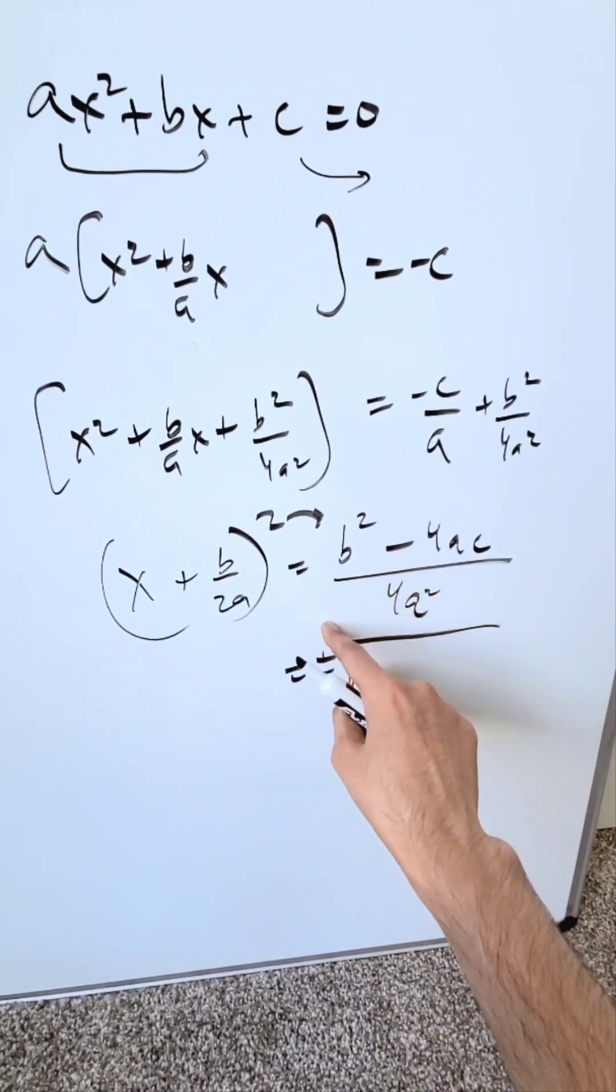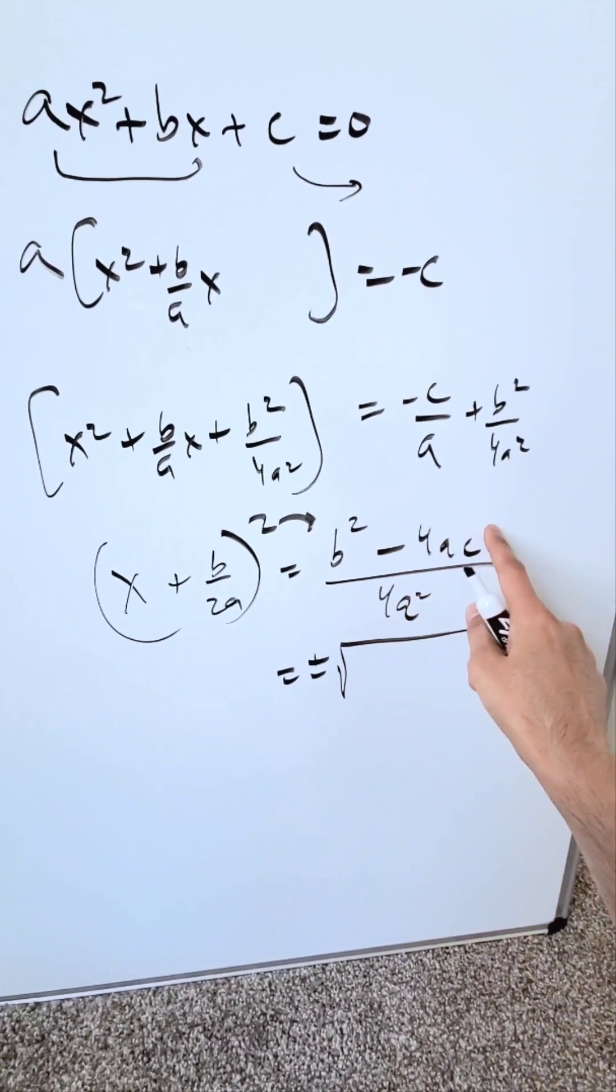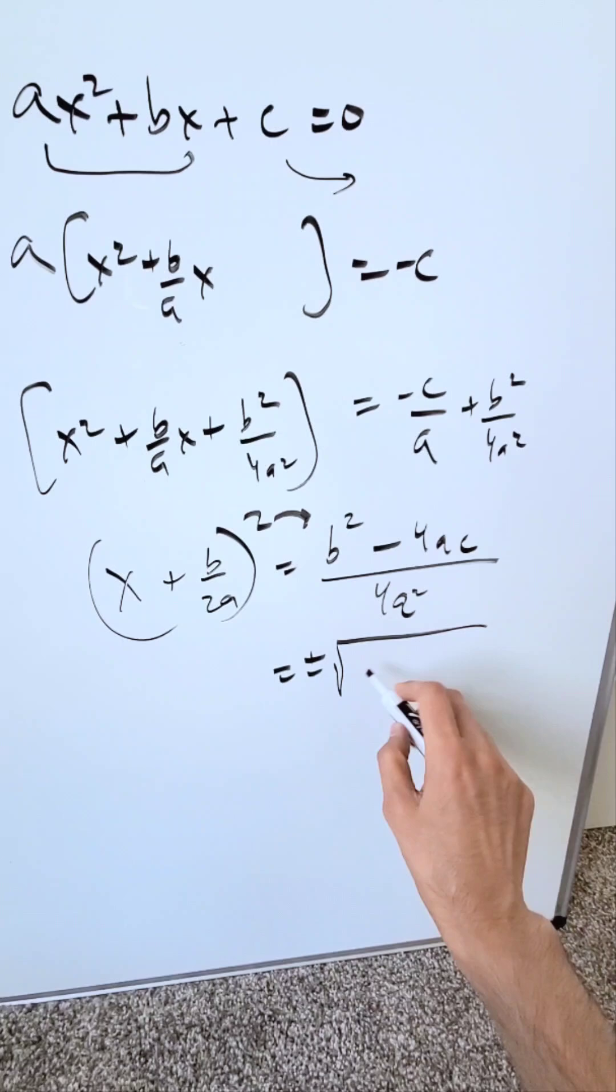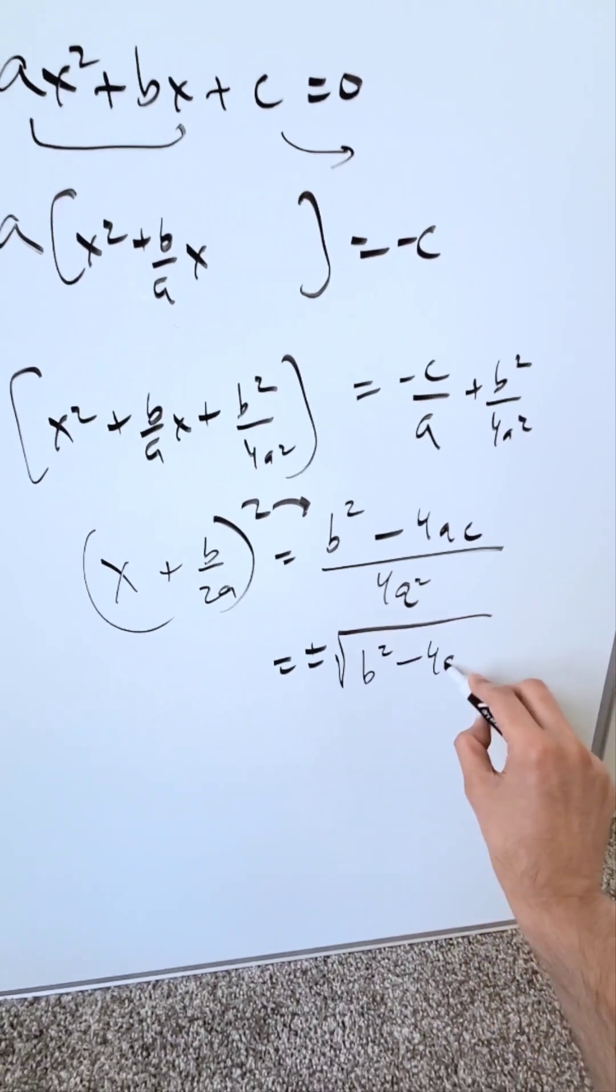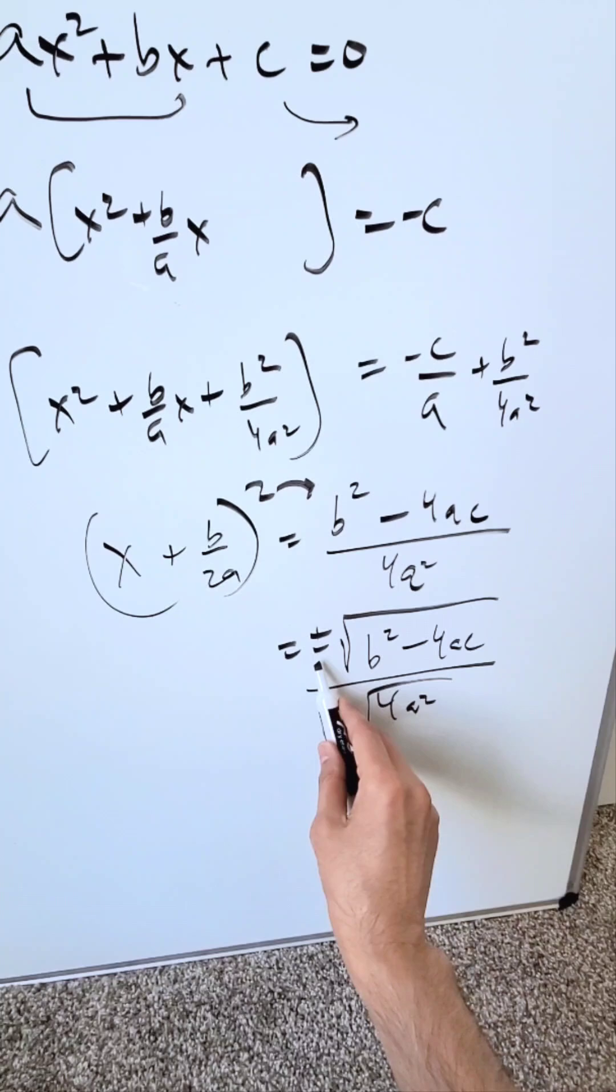I can bring in the square root uniformly across the entire numerator or denominator. I can separate it individually using your properties of radicals, which is what I'll do. b squared minus 4ac in its own root and 4a squared in its own root, and you have that plus and minus.